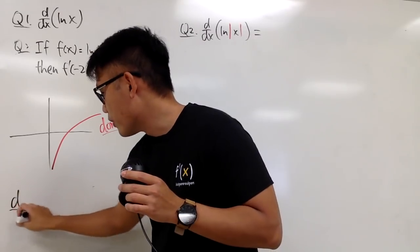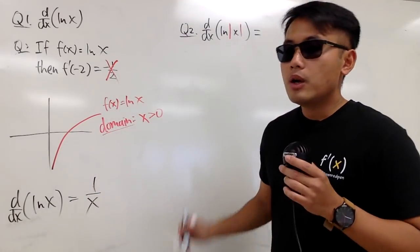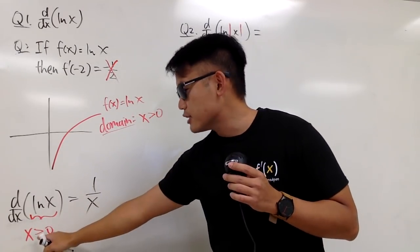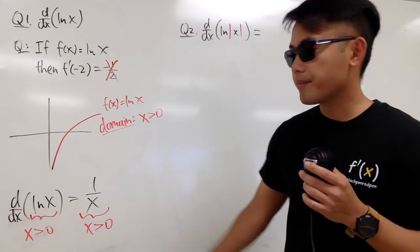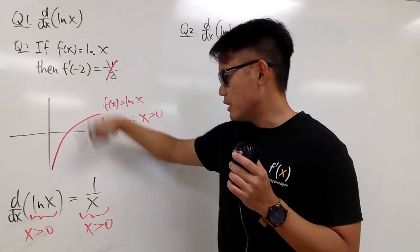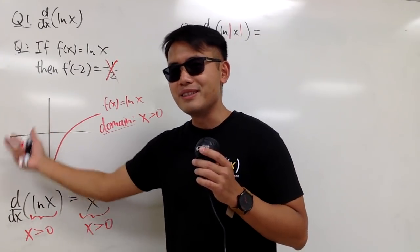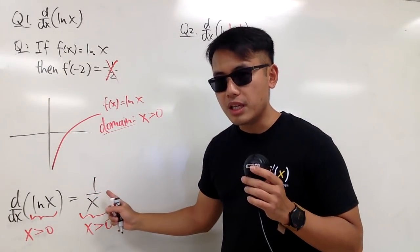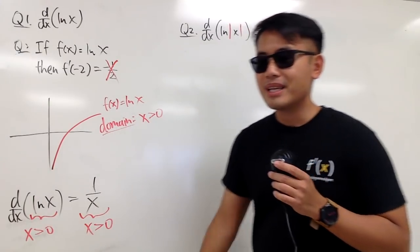Here is the deal. When people say let's take the derivative of ln x and the answer is 1 over x, we have to pay attention that since the original function has the restriction that x must be greater than 0, we also have to make sure the derivative 1 over x also has x greater than 0. So earlier when I asked you to plug in negative 2 and you got negative 1 half, you are making a technical mistake because originally there's nothing in the graph, so you can't even talk about the derivative at all. The domain of the derivative is either the same as the original domain or smaller.